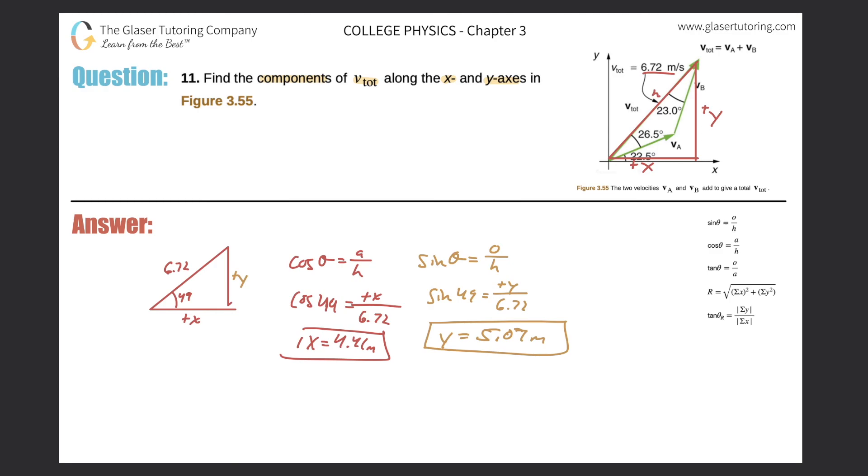And that would be it. Those would be the x and y components of the total vector. Guys, thanks for tuning in. Hope this helped. Please remember to subscribe, and I'll see you next time.